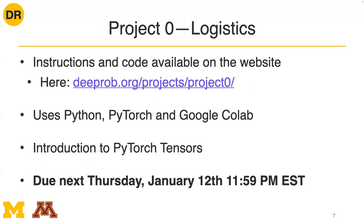The tensor objects are what are going to be powering all the neural networks that will follow in this course and make them efficient to run. In terms of logistics, the project was released early Thursday morning. The instructions and code are all available on the website at deeprob.org/project/project-zero. We're going to be using Python, PyTorch, and Google Colab, and it's due January 12th - the evening of our Thursday lecture next week.